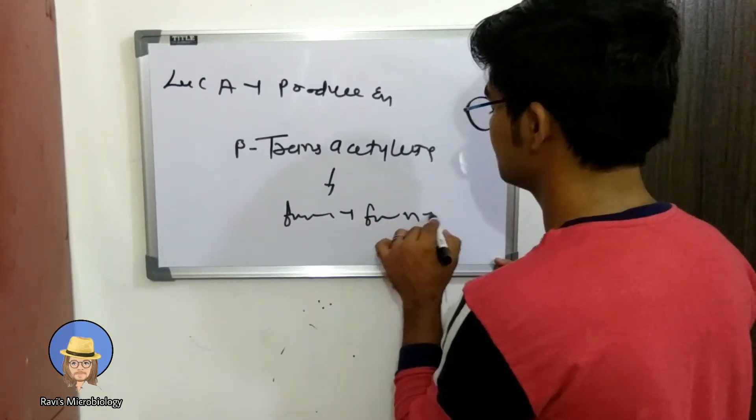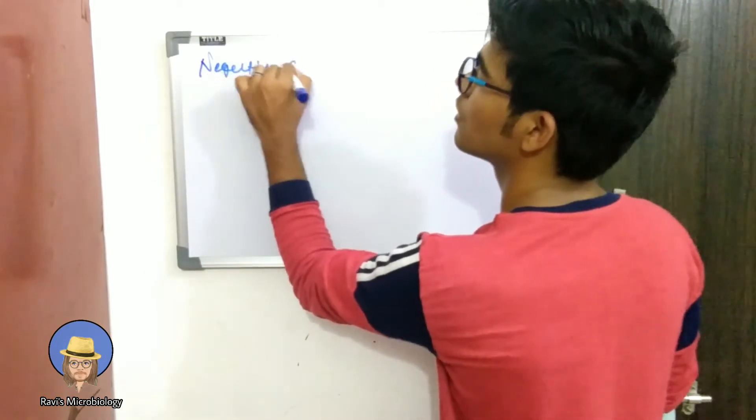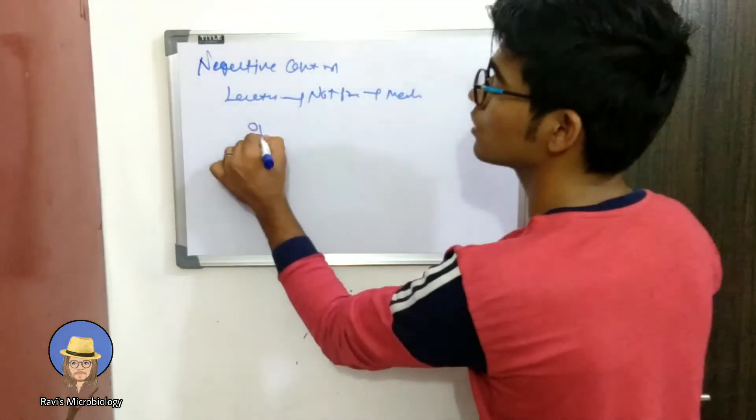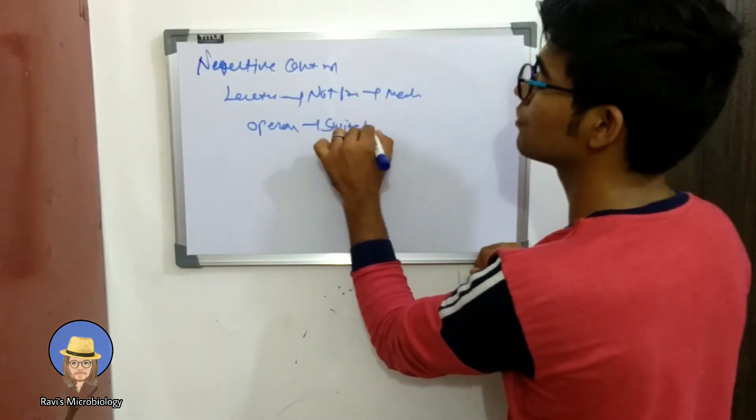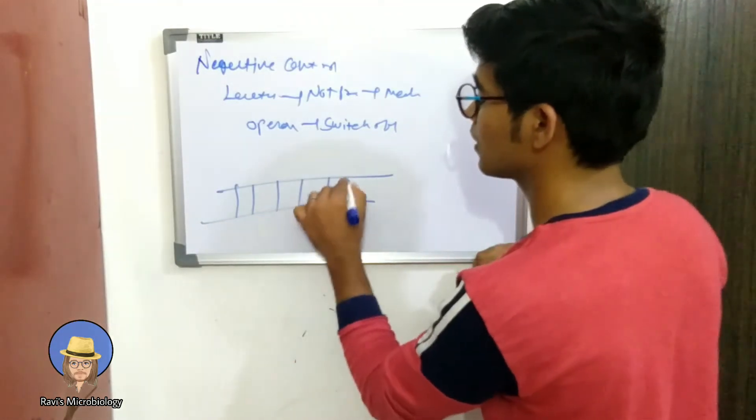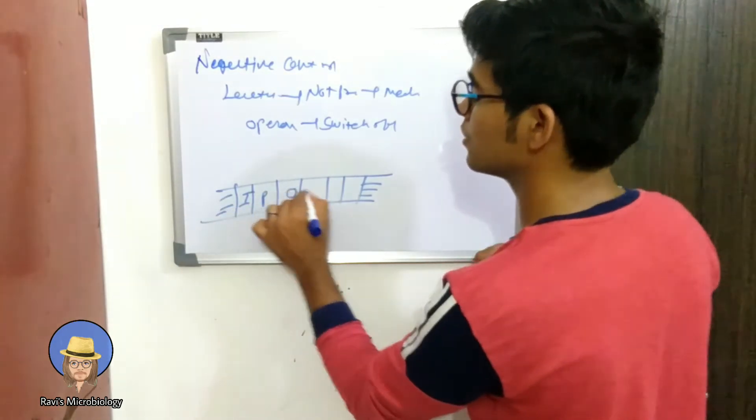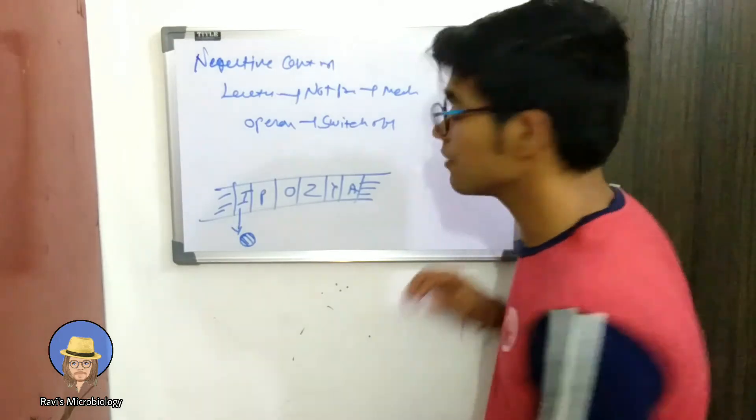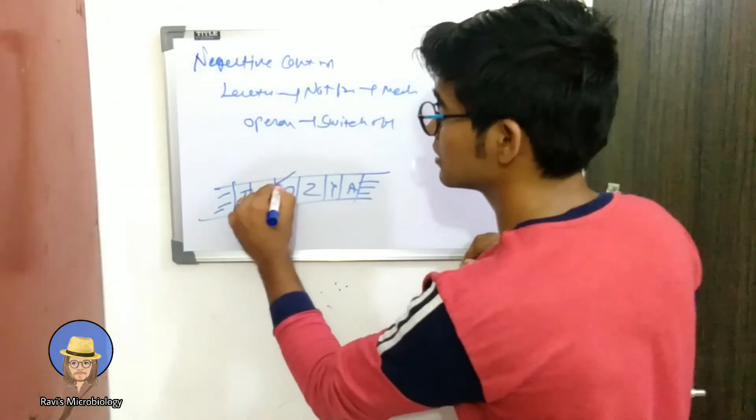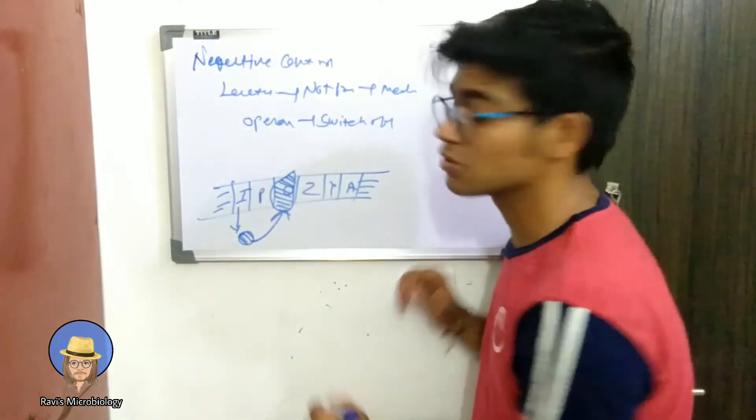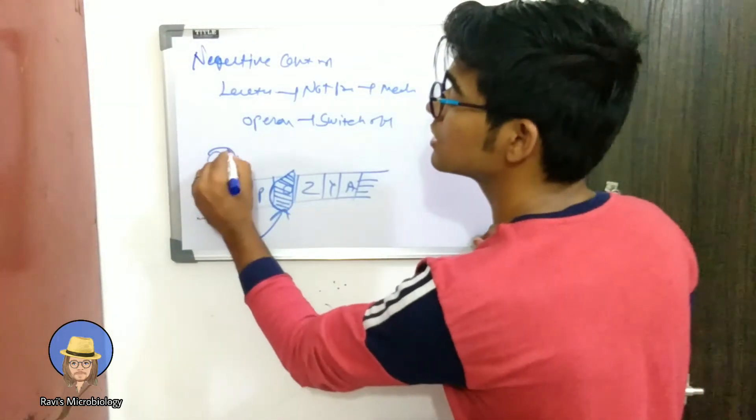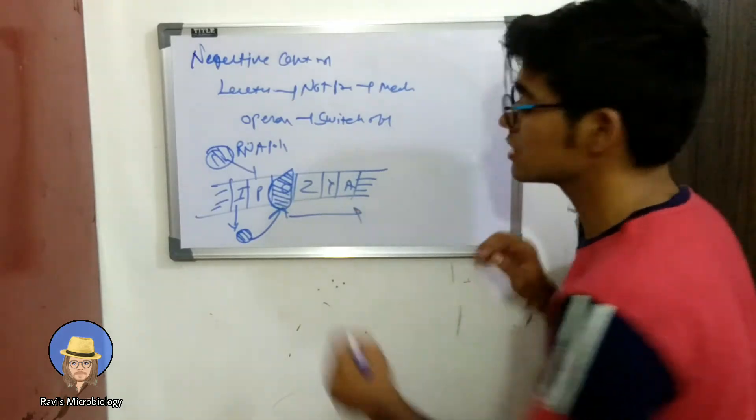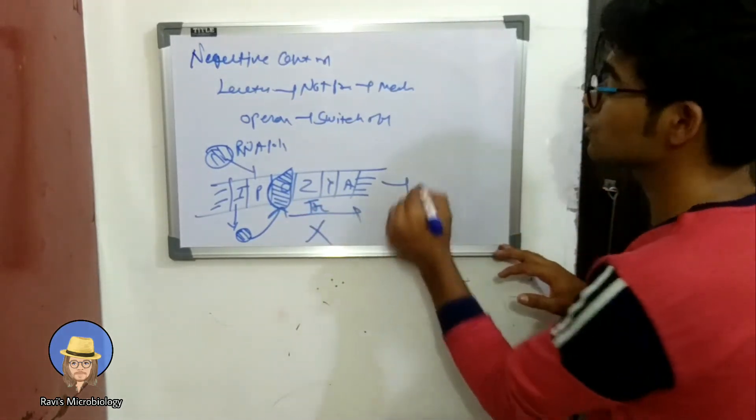In negative control, lactose is not present in the medium, so operon should be switched off. So here is the genetic map. Lac I will produce repressor protein. The repressor protein has binding affinity with O site, so it will bind with O site. It will take some part of P site, so configuration of P site will change and the RNA polymerase will not bind with P site. The transcription will not happen, so ultimately the lactose operon will switch off.